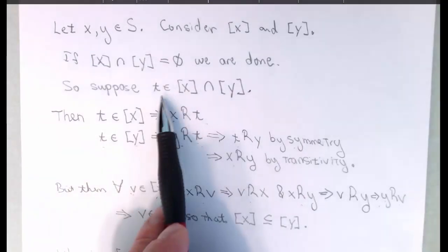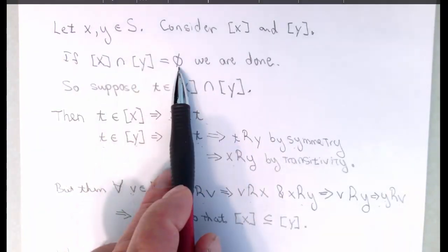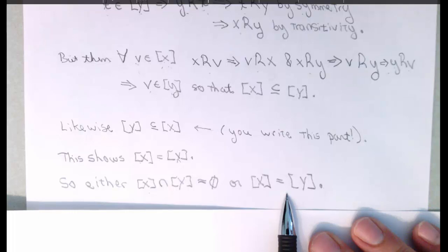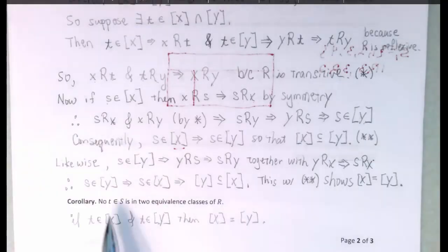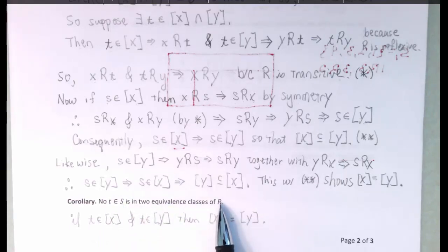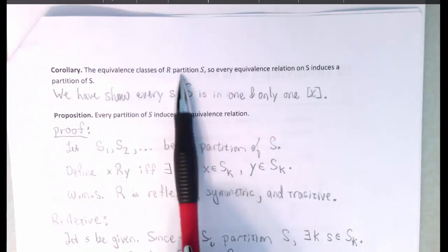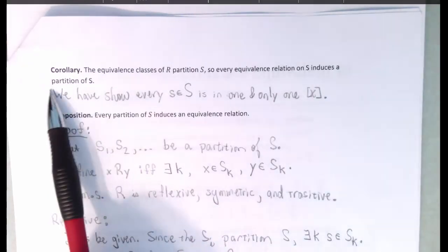That's under the assumption that there is some element in the intersection. So what we've shown is this: either the intersection is empty, or if it's not, then the equivalence classes are equal. That's what we wanted to show. The equivalence classes of the elements of S form a partitioning of the set S. We've shown that no T in S is in two distinct equivalence classes of R. If T is in X and T is in Y, then X and Y as equivalence classes must be equal. We've shown that the equivalence classes of R partition S, so every equivalence relation on S induces a partition of S.